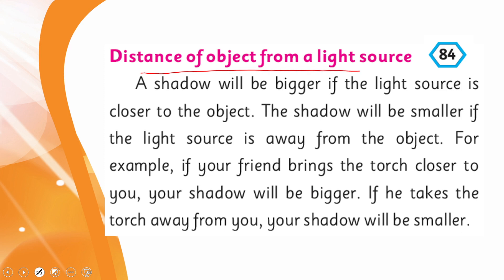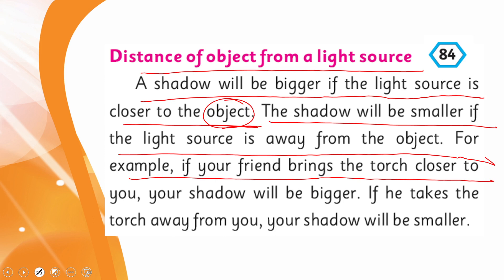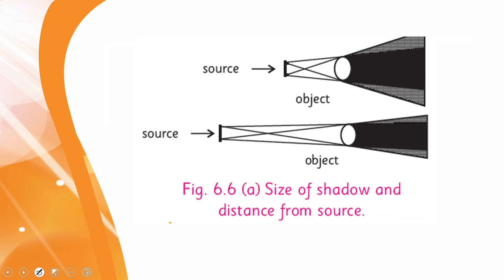Regarding distance of object from a light source: a shadow will be bigger if the light source is closer to the object. The shadow will be smaller if the light source is away from the object. For example, if your friend brings the torch closer to you, your shadow will be bigger; if he takes the torch away from you, your shadow will be smaller. You can see that when the light source is close to the object, the shadow is big, and when it is far, the shadow is smaller.